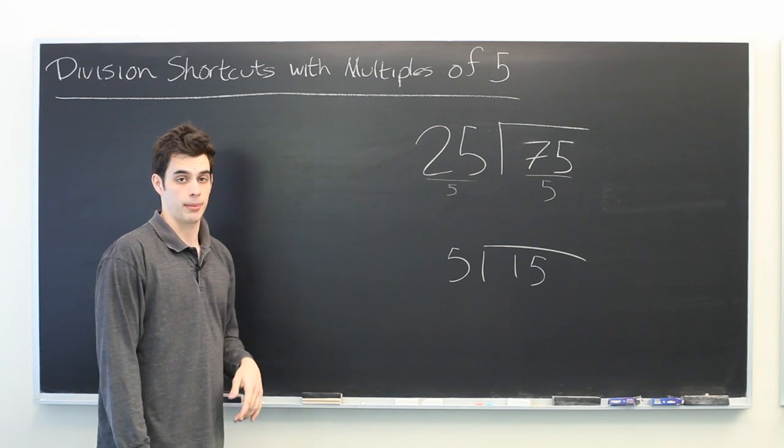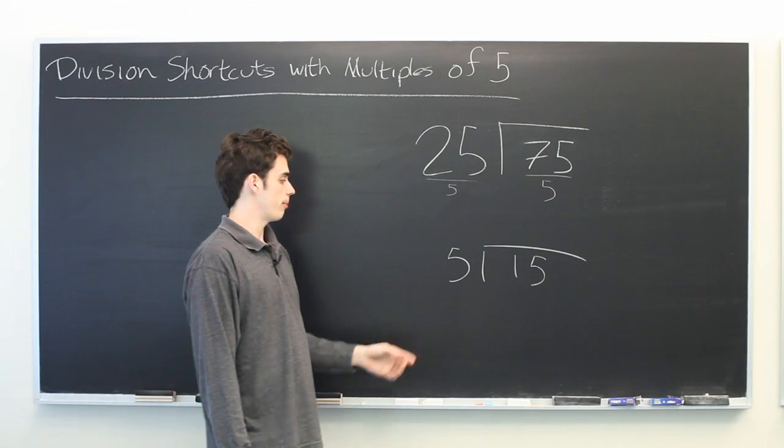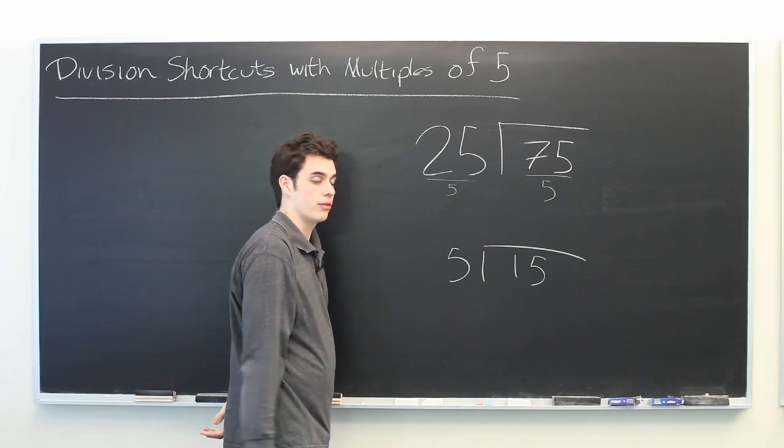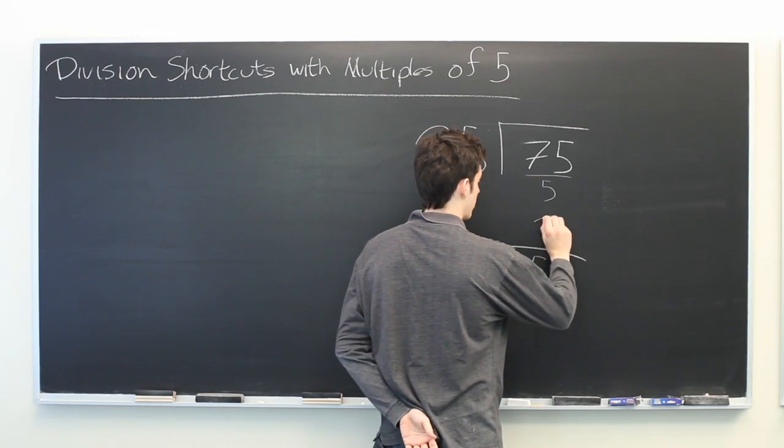Now these two problems will give us the same answer, and this is much simpler. Five goes into fifteen three times with no remainder.